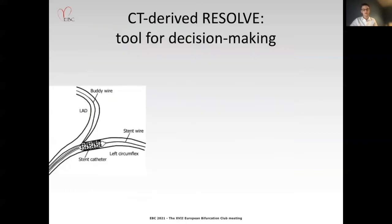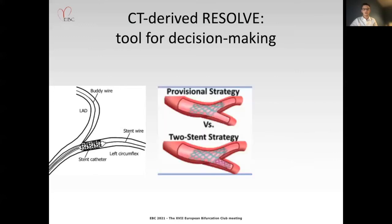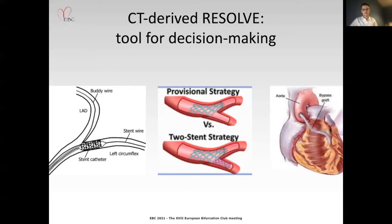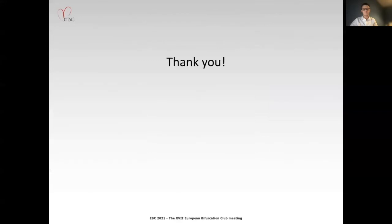As such, the proposed CTA-derived visual Resolve Score might be particularly useful in identifying a larger number of lesions at increased risk of side-branch occlusion after initial main vessel stenting, and may be used to determine optimal preemptive measures. Depending on the importance of the side branch, this could include protection of the side branch with a buddy wire, application of a two-stent procedure, or even deferring PCI and referring specific patients to surgery. Nonetheless, further studies are warranted to find specific CTA predictors of side-branch occlusion. Thank you for your attention.